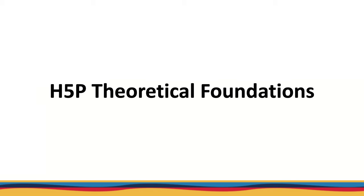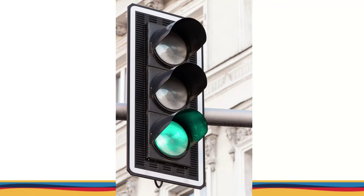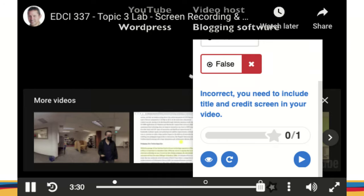So what are some of the theoretical foundations for using an interactive and multimedia tool like H5P? Some of the principles of multimedia learning related to H5P include: the signaling principle, which states that people learn better when cues are added that highlight the key information; the spatial and temporal contiguity principle, where people learn better when corresponding words and pictures are presented close to each other in time and space; and the feedback principle, where people learn better for multimedia lessons when they receive explanative feedback on their performance.